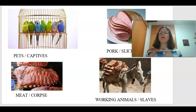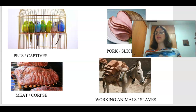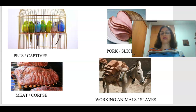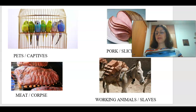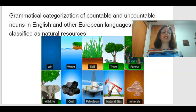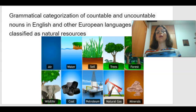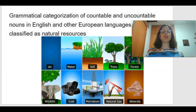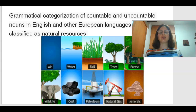It will be very questionable whether someone would be willing to eat meat if we referred to it as 'corpse.' Grammatical categorization of countable and uncountable nouns in English and other European languages classifies natural resources such as air, water, soil, trees, and forest as uncountable nouns, which justifies their intensive exploitation without any restriction.